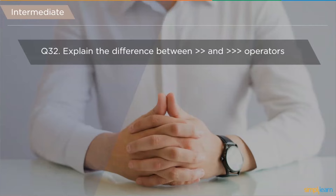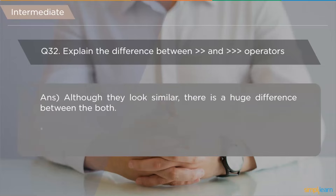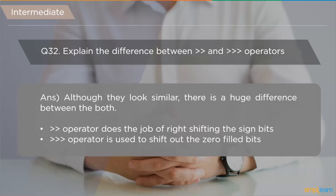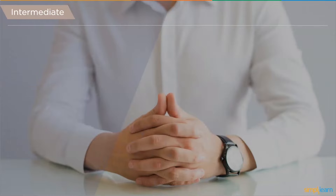The next question asks to explain the difference between two shift operators. The first operator with two greater-than symbols ('>>') shifts bits to the right when given a binary value. The second operator with three greater-than symbols ('>>>') is used to shift out zero-filled bits. These are the functionalities of these two operators.